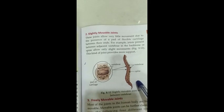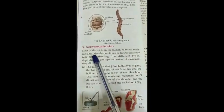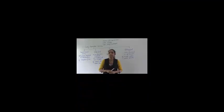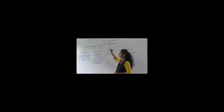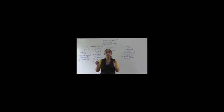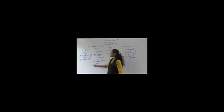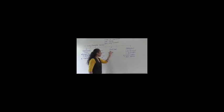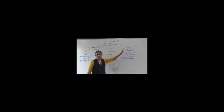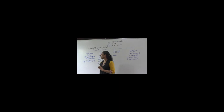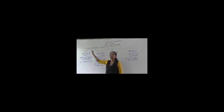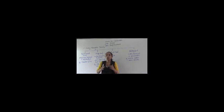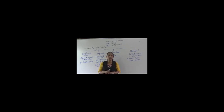Now we will discuss freely movable joints. These joints are found in most parts of the body and allow maximum movement. Freely movable joints are further classified into four types: ball and socket joint, hinge joint, pivot joint, and gliding joint. These joints help perform body movement in most or all directions.